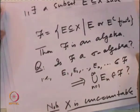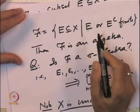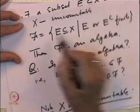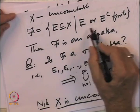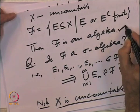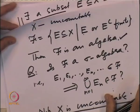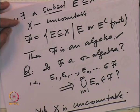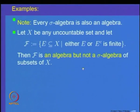So when X is uncountable, the collection F of sets E where E or E complement is finite is an algebra but not a sigma algebra of subsets of X, because F is not closed under countable unions. This shows that every sigma algebra is an algebra, but every algebra need not be a sigma algebra. Let us now look at some more examples of sigma algebras.